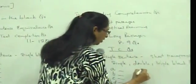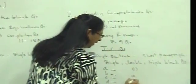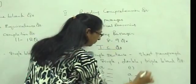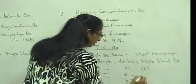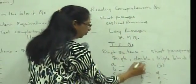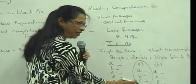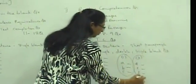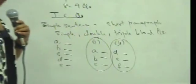If you have a double blank, you have two columns of words, A, B and C. Second blank, D, E and F. If you have a double blank question, for the first blank, you have to select from A, B and C. For the second blank, you have to select from D, E and F.